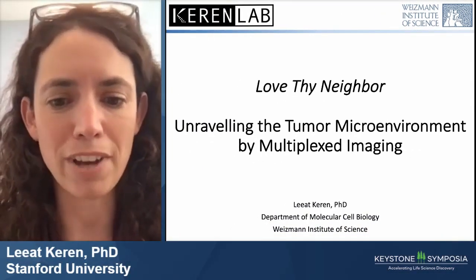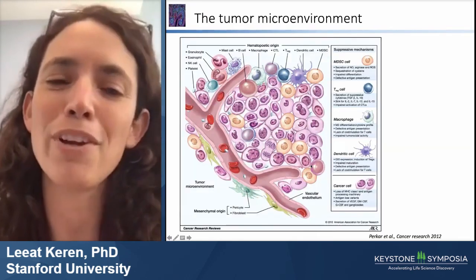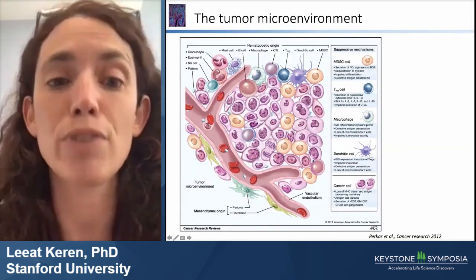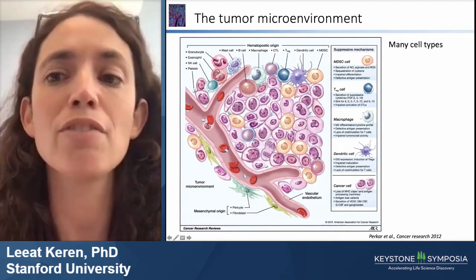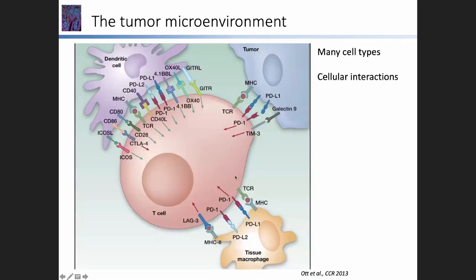The tumor microenvironment is incredibly complex. It is comprised of many different cell types, including tumor cells, stromal cells, vasculature, and a lot of different immune cells. Moreover, all of these cells need to communicate and interact with each other in order to derive complex phenotypes that we're interested in understanding, such as tumor progression and response to treatment.